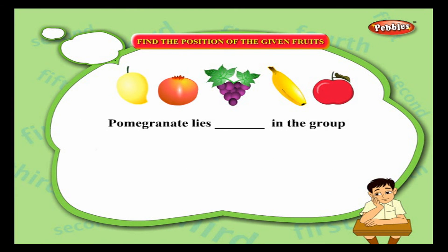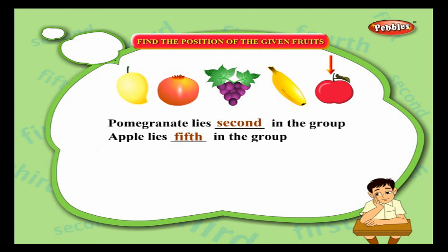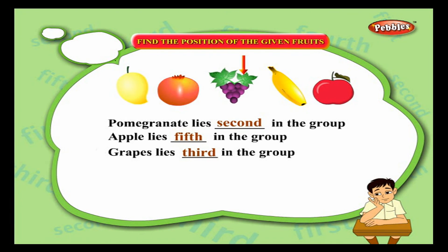Pomegranate lies in the group — count the position: first, second — it lies second in the group. Apple lies in the group: first, second, third, fourth, fifth — it lies fifth in the group. Grapes lies in the group: first, second, third — it lies third in the group.